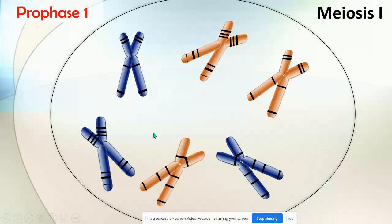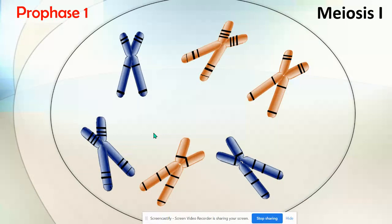Now we're finally getting into meiosis. Meiosis has two rounds of division. This first part is called meiosis I, and it includes prophase I, metaphase I, anaphase I, telophase I, and cytokinesis I. Then we go through meiosis II, with prophase II, metaphase II, and so on. A lot of the things that make meiosis different from mitosis happen here in prophase I.